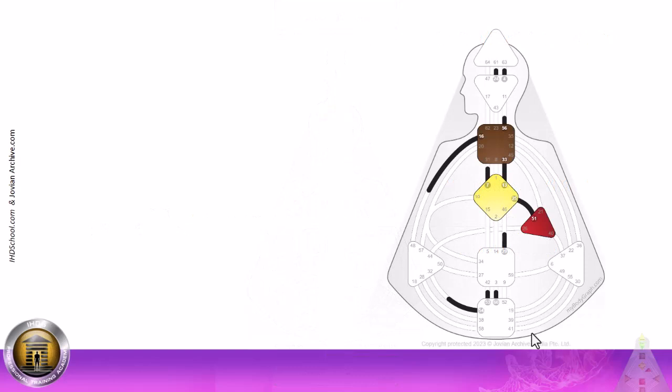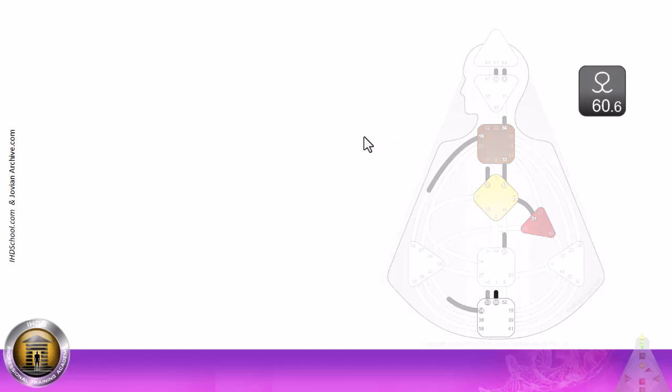But since you and I, we're all human design geeks, we want to help ourselves understand it for ourselves and others. We want to do this work. So if we look right away here, look at the north node in this configuration. The fact that it's the 60th gate here in an undefined center, as far as the personality is concerned, it thinks that that is an undefined root center.